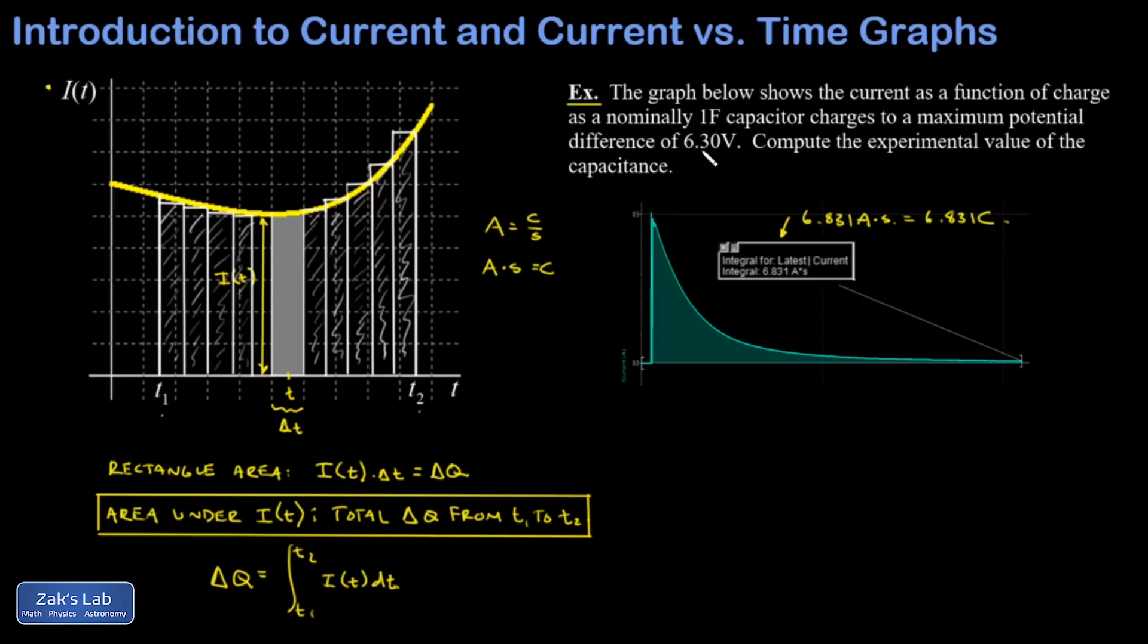You may have noticed in the video that our final potential difference across the capacitor was 6.30 volts. And our mission here is to actually get an experimental value of the capacitance, and we'll compare that to the 1 farad nominal value on the capacitor. So I get 1.08 farads. The capacitors are labeled as 1 farad, so this is about an 8% error.